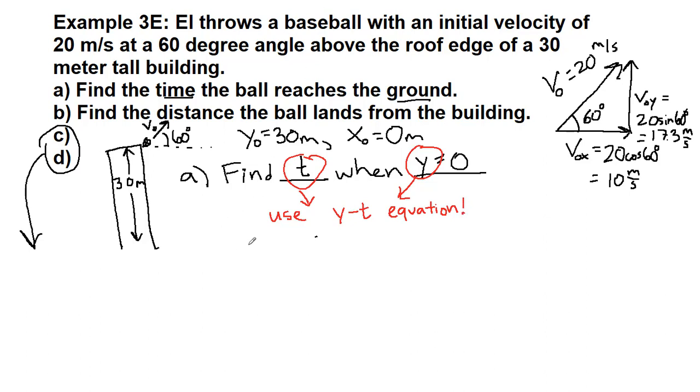We want to write the equation before we plug any numbers in. So y equals y naught plus v naught y t minus one half g t squared here in chapter three. We have a final height of zero, an initial height of 30, plus 17.3t, minus 4.9t squared.